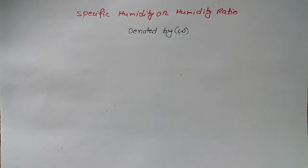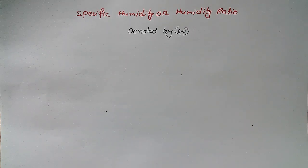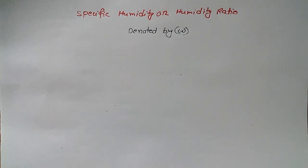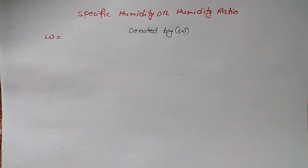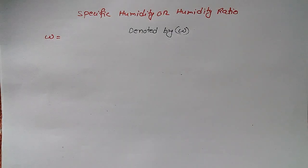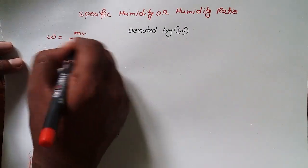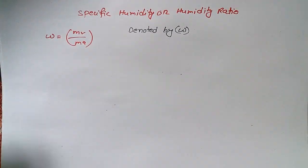Hello, my dear. This is one of the most favorite topics if you study air conditioning systems. So what is specific humidity or humidity ratio? It is denoted by omega. I'm going to share with you the numerical concept — what you need to know to solve numericals using this formula. So omega is equal to mass of water vapor upon mass of air. This is the formula for specific humidity.